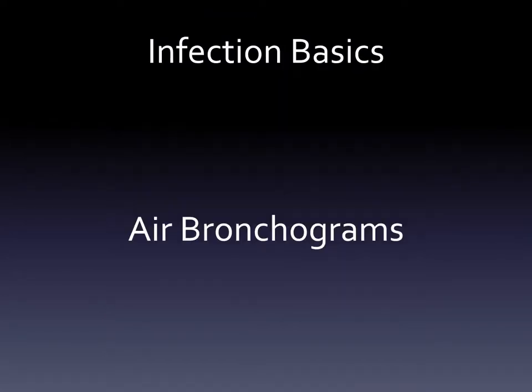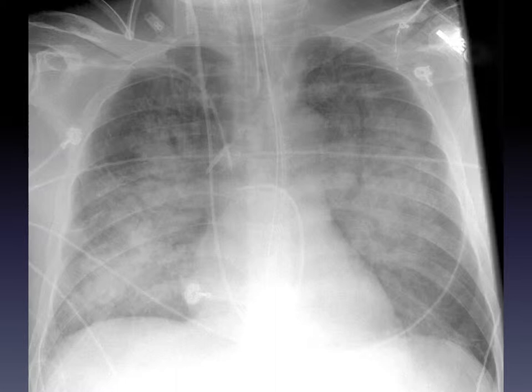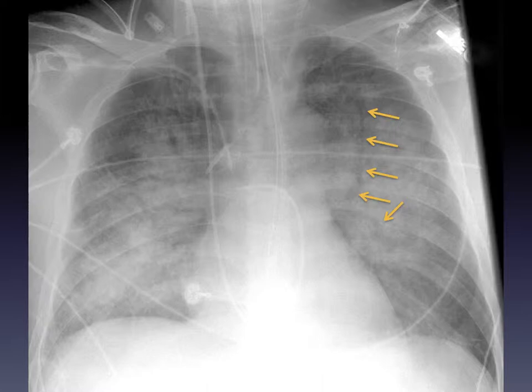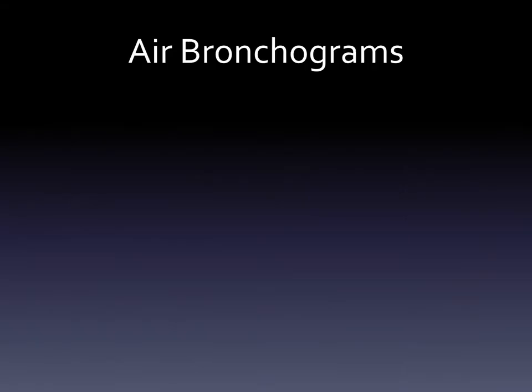The other topic I wanted to mention before we talk about different types of infections is the concept of air bronchograms. Here's a very sick patient — there's lots of material filling the lungs, so the lungs are very white. Because there's so much opacity, we can actually make out a tubular, darker structure going up towards the patient's head. Here I'll highlight it with some extra arrows — you can see this tubular, low-density structure going up, and in fact we can see some other tubular structures elsewhere. These are the air bronchograms.